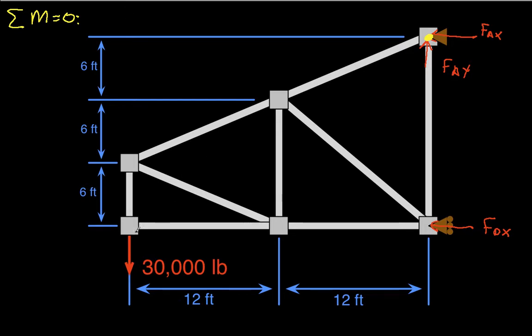So about A, we have a 30,000 pound force with a lever arm of 24 feet. And then we have FDX as force here with a lever arm of 18 feet. And we can solve this for FDX. And when we solve this for FDX, we get that FDX is 40,000 pounds.